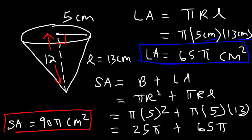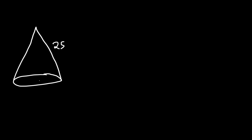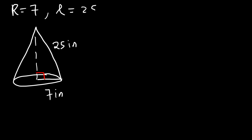Now you know how to find the volume, the lateral area, and the surface area of a cone. Let's work on another example — this time we're given the slant height and the radius. The radius is 7 inches and the slant height is 25 inches. Go ahead and calculate the volume, the surface area, and the lateral area. We know r = 7 and l = 25; what we need to find is h.